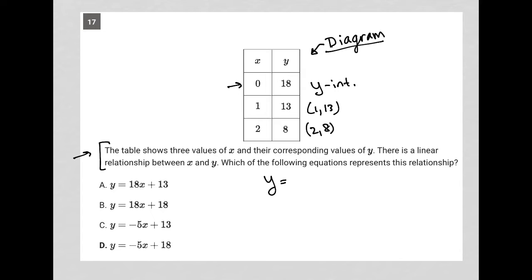Linear relationship always means y equals mx plus b. Between x and y, which of the following equations represents this relationship? Well, one thing I know is that my b-value, the y-intercept, has to be 18. So that means choice A and C are automatically gone because the b-values there are 13.